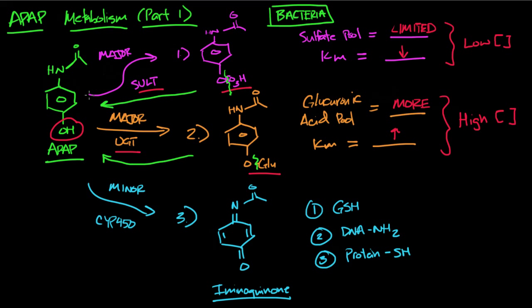So let's say we had some really active bacteria, and you couldn't metabolize things via the sulfotransferase or the UGT. The third pathway that we're going to look at, it's generally a minor pathway, but if you have a lot of acetaminophen and you can't do pathway one or two, you could shunt it over via CYP450.